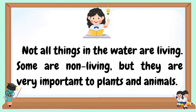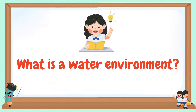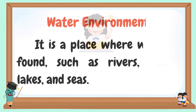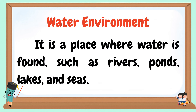Not all things in the water are living — some are non-living, but they are very important to plants and animals. What is a water environment? A water environment is a place where water is found, such as rivers, ponds, lakes, and seas.